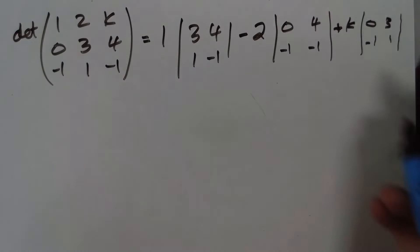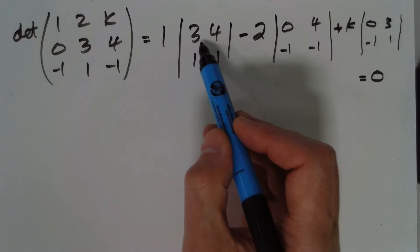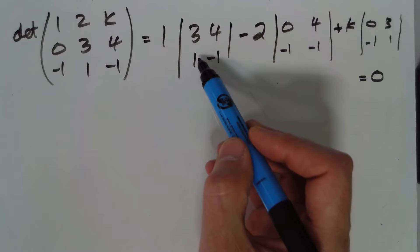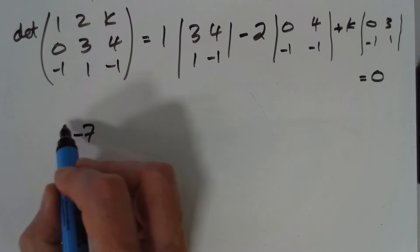And because it's singular, we know that this answer is going to equal 0 when we get it. So let's work out each of these individually. So we've got minus 3, take away 4 here, so that one's minus 7.